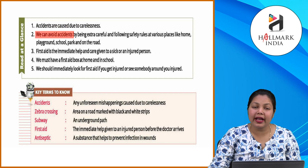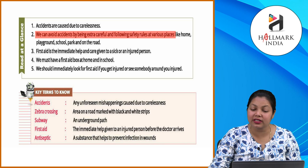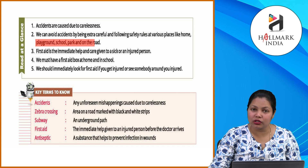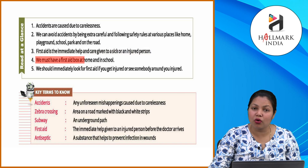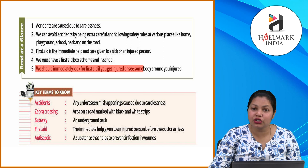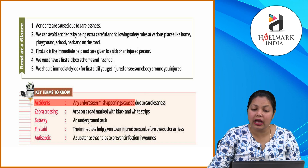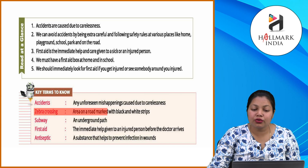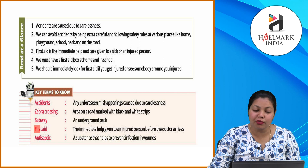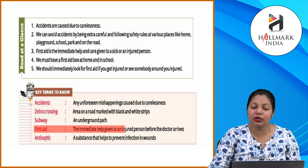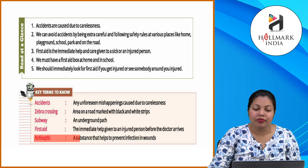At a glance: Accidents are caused due to carelessness. We can avoid accidents by being extra careful and following safety rules at various places like home, playground, school, park, and on the road. First aid is the immediate help and care given to a sick or injured person. We must have a first aid box at home and in school. Key terms: Accidents — any unforeseen mishappening caused due to carelessness. Zebra crossing — area on the road marked with black and white stripes. Subway — an underground path. First aid — immediate help given to an injured person before the doctor arrives. Antiseptic — a substance used to prevent infections and wounds.